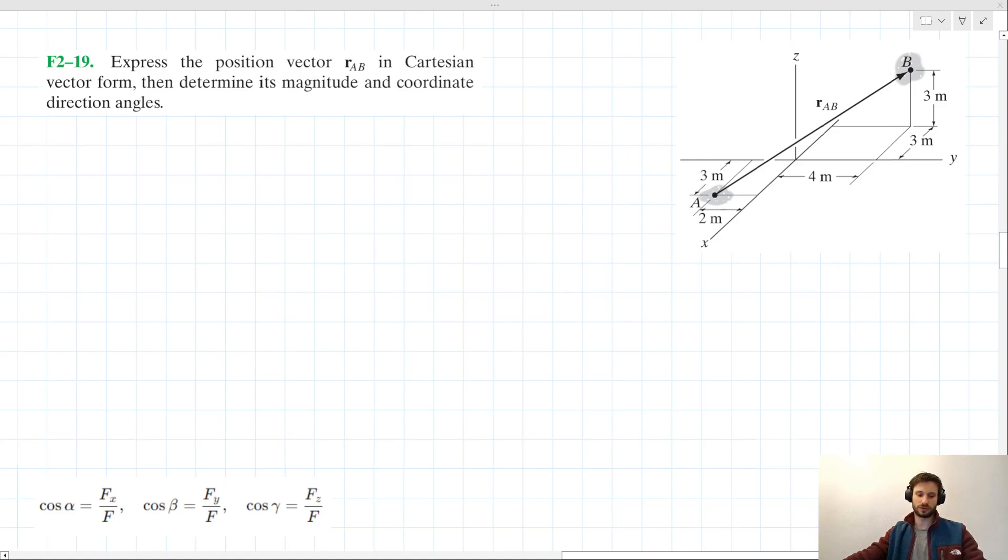Looking at this problem statement, it's almost like we have three different sections to it. We've got this Cartesian vector form idea, so it's asking us to express this vector in Cartesian vector form, which I'm trusting you're familiar with already, its magnitude, and coordinate direction angles. Let's take each part of this problem one by one.